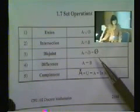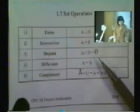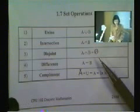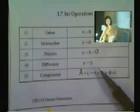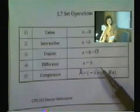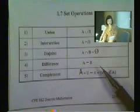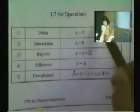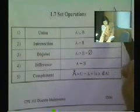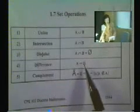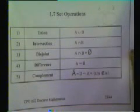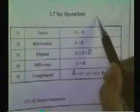Difference. In definition number four, the difference of set A and B would be written this way, just like A minus B. What would that be if we draw a Venn diagram? A minus B, the difference of A and B, belongs to A but not to B.